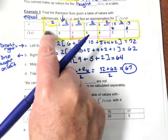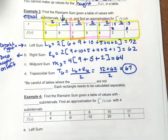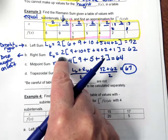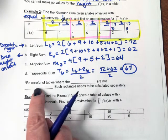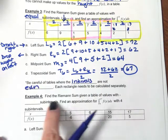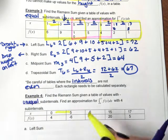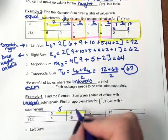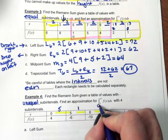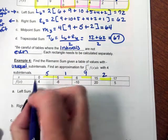With table problems, the difference between x values could be constant or different. If they're different, you have to calculate the area of each individual rectangle — you can't factor out a common width. You'd have to write length times width for each individual rectangle. So be careful when table intervals are not even. For example: find the Riemann sums given a table of values with unequal subintervals. The differences are: 0 to 5 is 5, 5 to 6 is 1, 6 to 15 is 9, and 15 to 17 is 2 — so each rectangle has a different width.